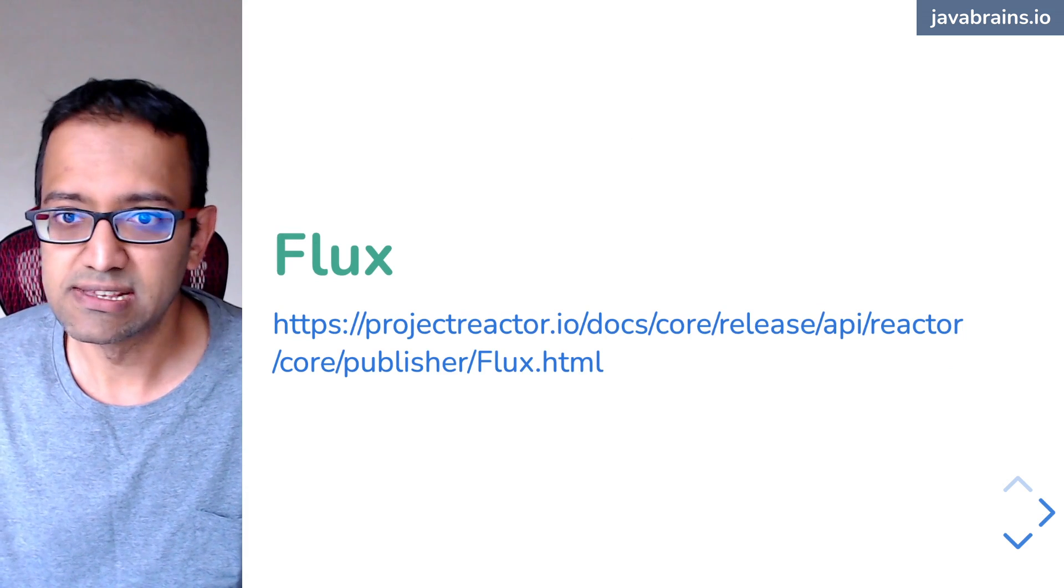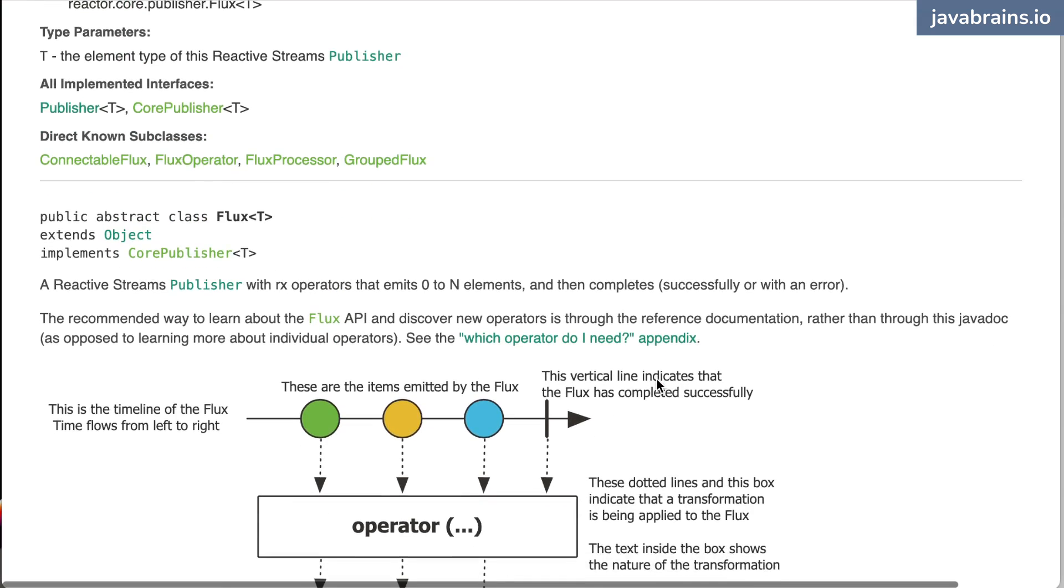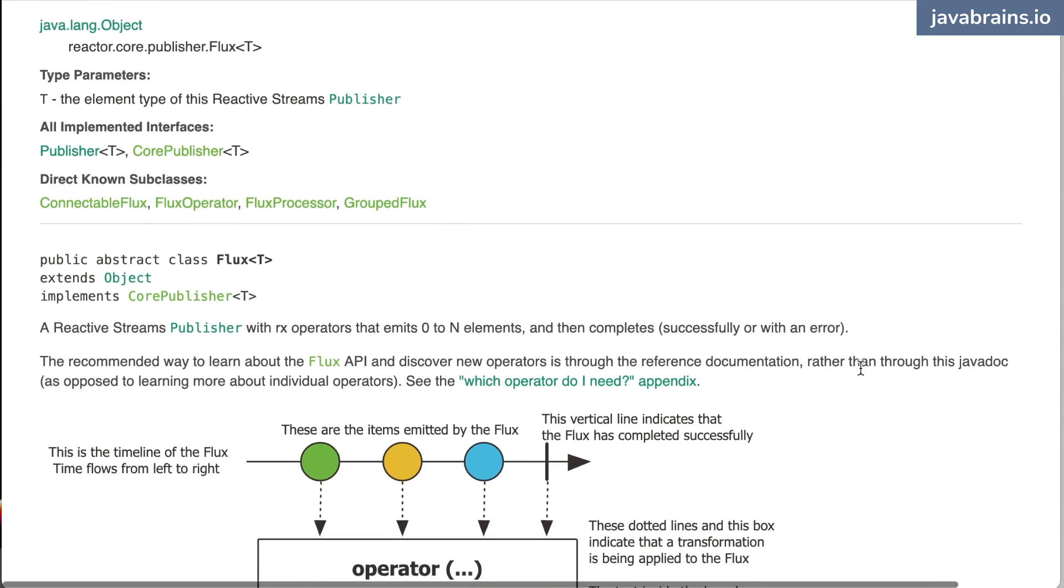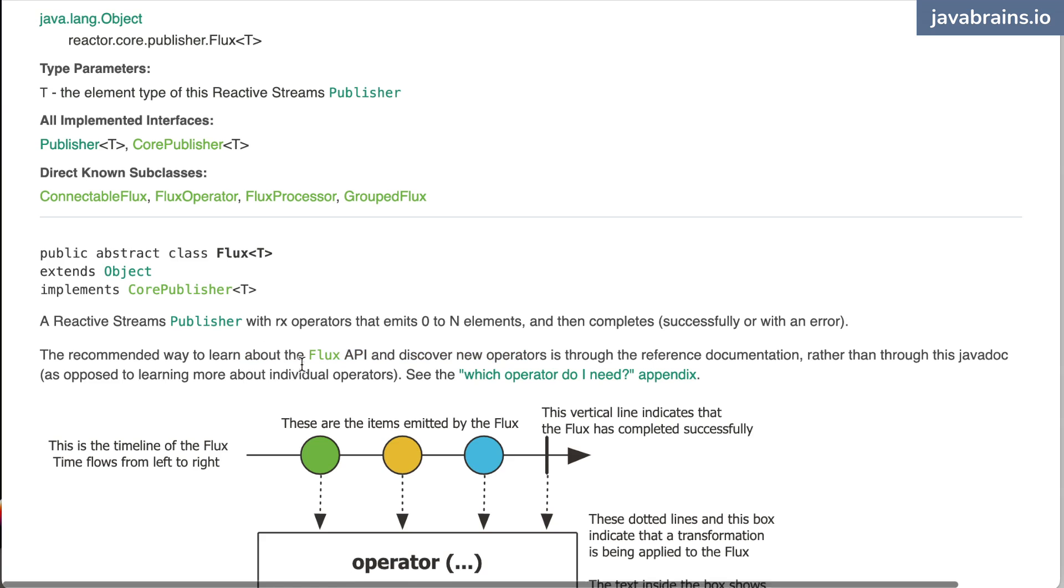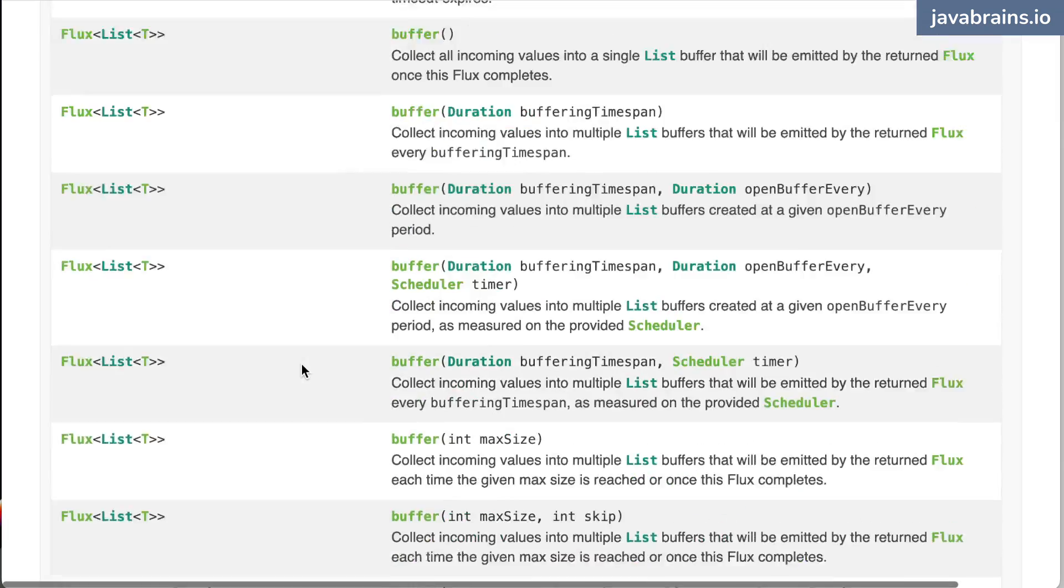All right. So here is the Javadoc for Flux. And there's a whole lot of methods that you can use to operate on it. Okay. So here is a Flux, a reactive stream publisher with Rx operations. Rx is basically reactive operations that emit zero to N elements and then completes either successfully or with an error. All this should be familiar to you now. Okay. So the recommended way to learn about Flux API and discover new operators is through the reference documentation rather than through this Javadoc. Okay. So there is reference documentation that I would recommend you read after you watch this workshop, but I am going to help you kind of navigate through this thing. Okay.